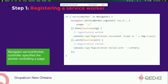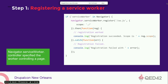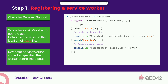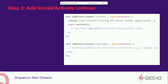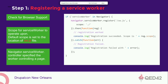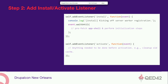The register call returns a promise — if it resolves it goes into the .then function; if it rejects it goes into .catch. Once you've registered the service worker with your scope for your current domain, say nola.qed42.net, any request passing to the server will now pass through service-worker.js.